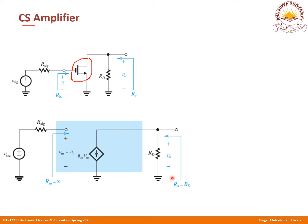The output voltage will be simply V0 = -Gm·Vgs·Rd. What will be your output resistance? Output resistance R0 is equal to Rd. Using the relationship, V0 = -Gm·Vgs·Rd. And Vgs is nothing but Vin. And V0 upon Vin — what happens? It's simply AV.